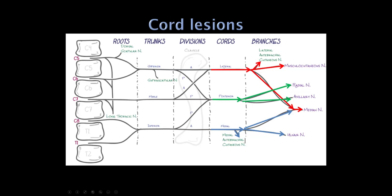Cord lesions are less common. With a lateral cord lesion, weakness is in the musculocutaneous nerve (biceps) and the median nerve — so pronator teres would be weak. A posterior cord lesion looks a lot like a radial neuropathy: wrist drop, finger drop, weakness of triceps. But since the axillary nerve also comes off the posterior cord, there will be deltoid weakness too. A medial cord plexopathy looks like a C8/T1 inferior trunk plexopathy — ulnar and median nerve weakness — but the key difference is that C8T1/inferior trunk contributes to the radial nerve, so a medial cord lesion will not have any radial nerve involvement.